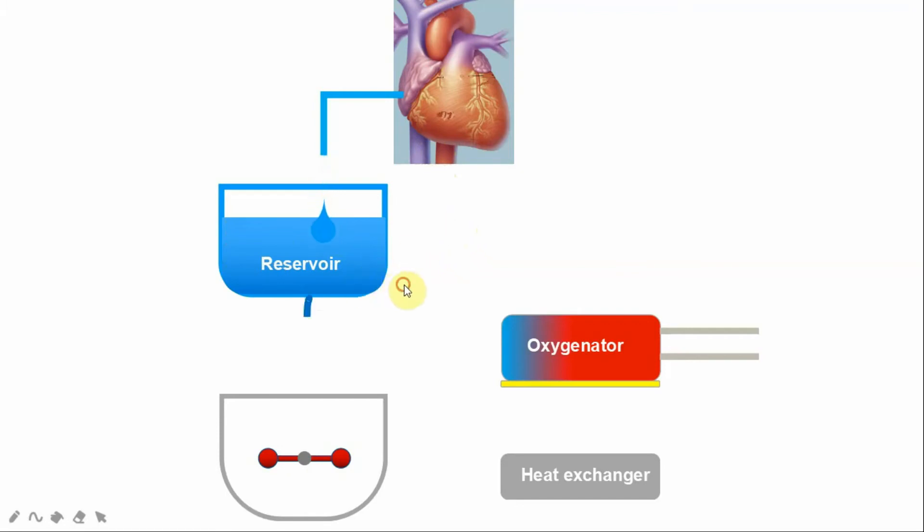From the reservoir, the blood is then taken to a pump system so that this blood can then go to the oxygenator. And this is unidirectional. The blood always goes from the reservoir to the oxygenator, not the other way around.